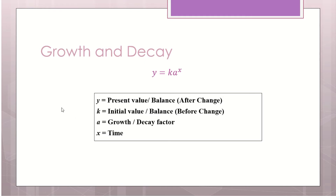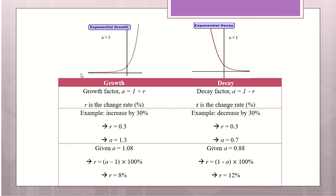So now this is the growth and decay formula. Y is your present value — the new value. K is the initial value, the original value. A is the growth or decay factor. Growth means the numbers are increasing; decay means something is decreasing. X is time. The growth curve slopes upward; the decay curve slopes down.